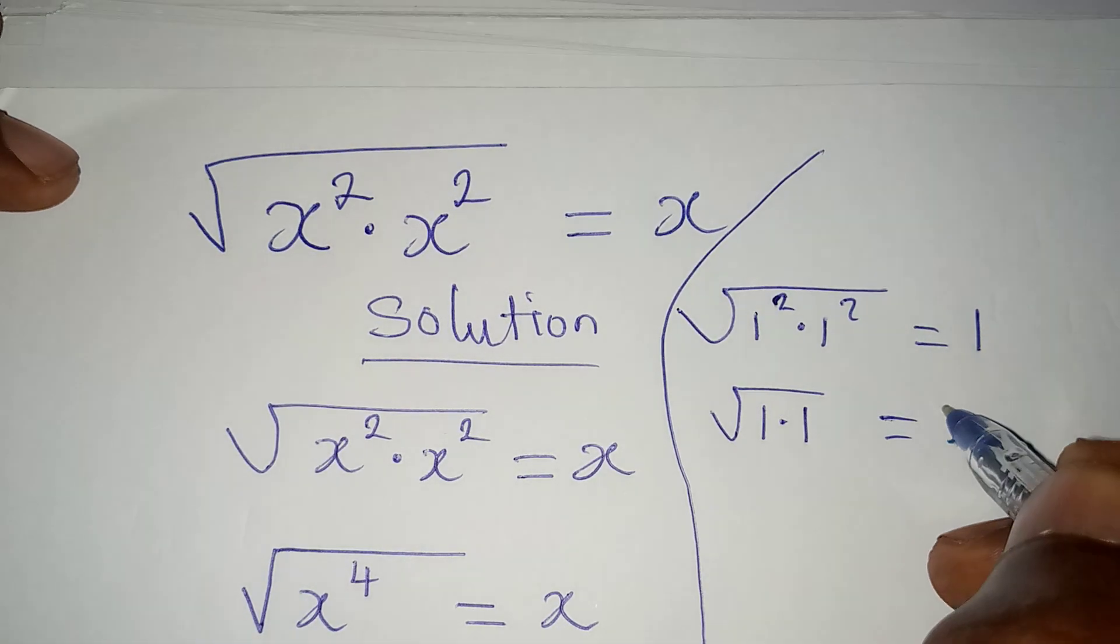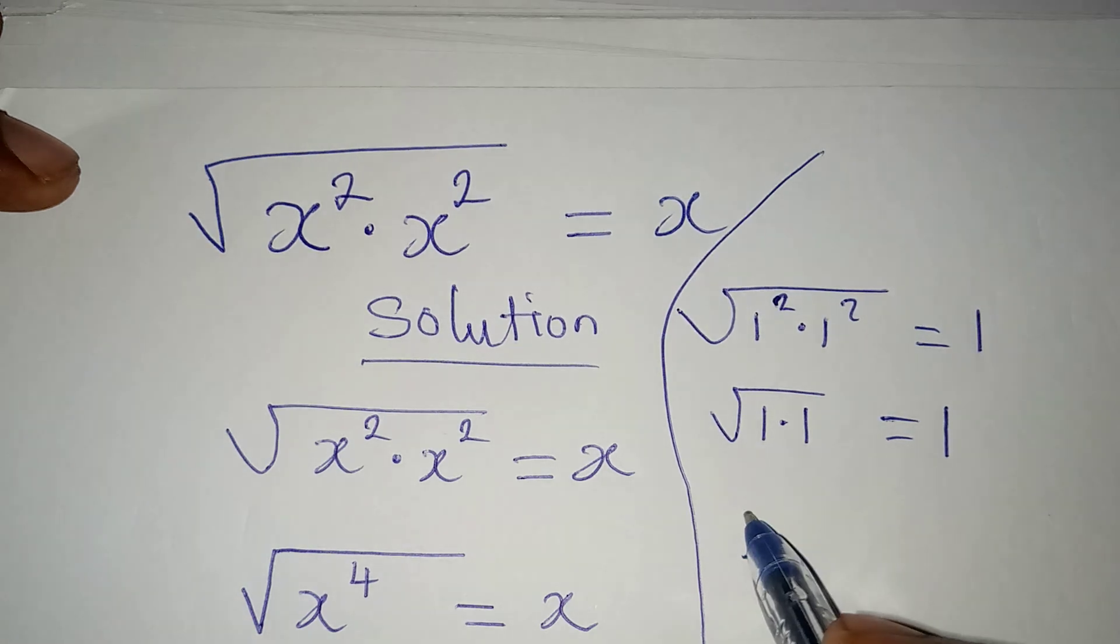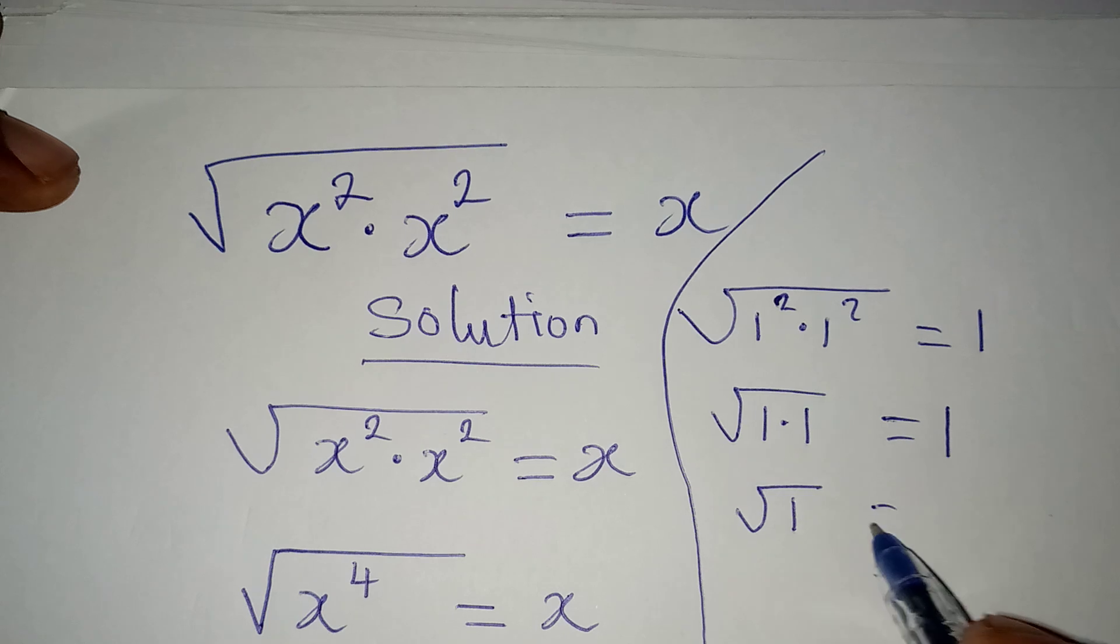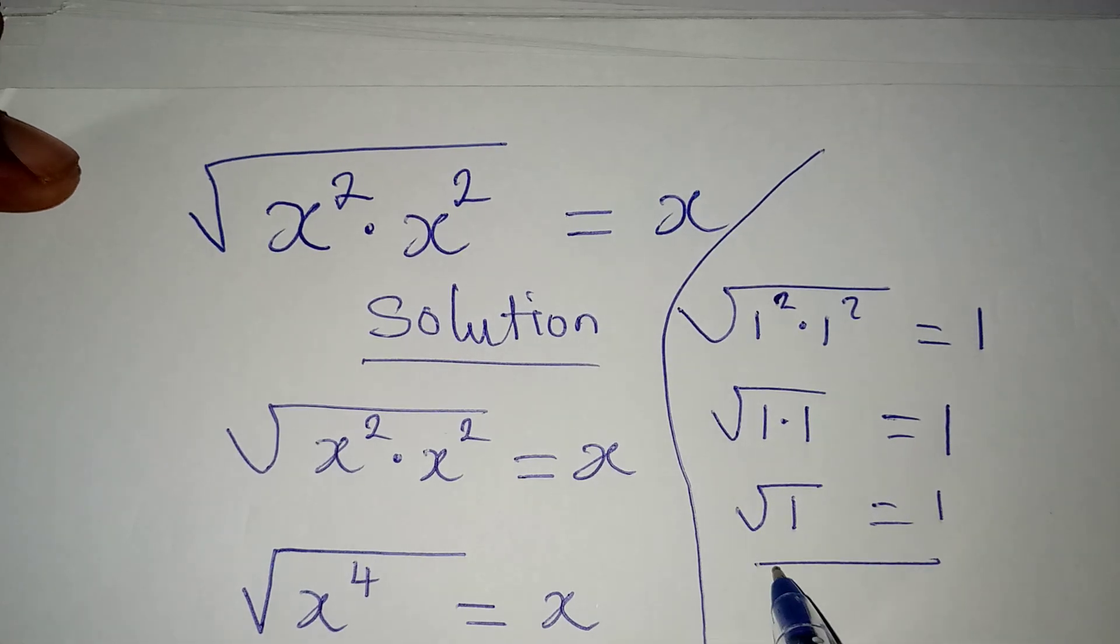Will this give us 1? Yes, because 1 times 1 will give us 1, and then square root of 1 is 1. So this is very correct.